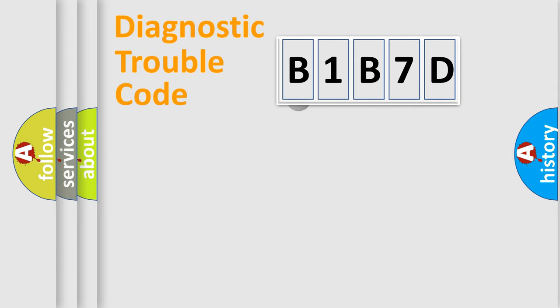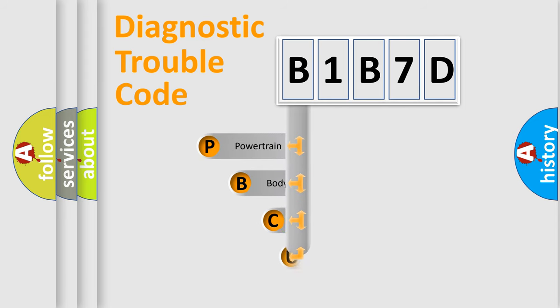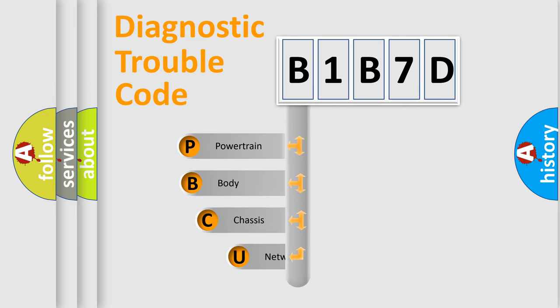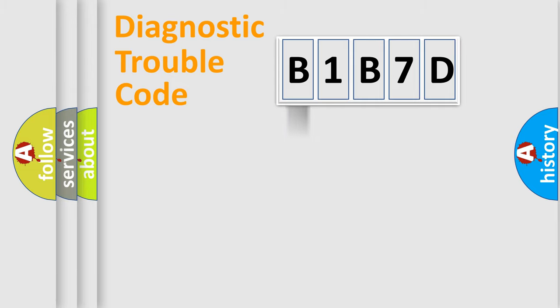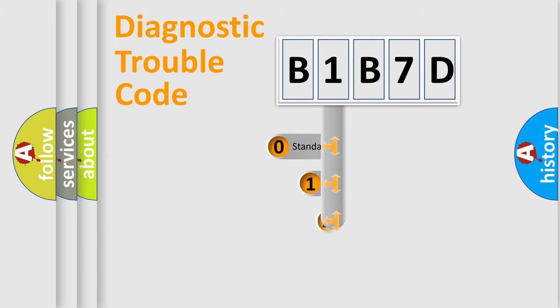First, let's look at the history of diagnostic fault code composition according to the OBD2 protocol, which is unified for all automakers since 2000. We divide the electric system of the automobile into four basic units: Powertrain, Body, Chassis, and Network. This distribution is defined in the first character of the code.